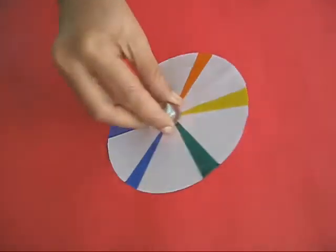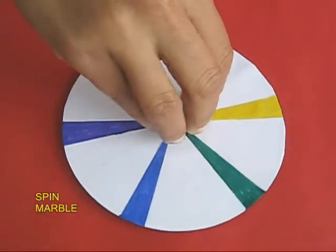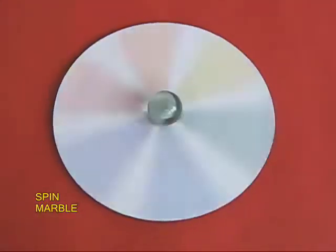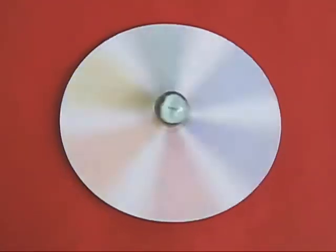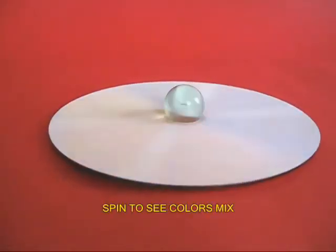Now your disc is ready to spin. This is the back side of it. If you spin it on a smooth floor, it would keep spinning for a very long time. All the colors would coalesce and you would see a grayish white.